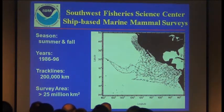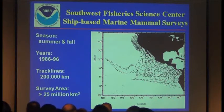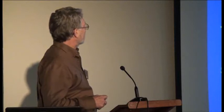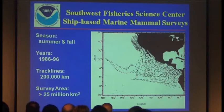Here you can see just some of the transect lines from a 10-year period of study from our Southwest Fisheries Science Center surveys. These were done in summer and fall of the years 1986 through 1996. The two main study areas are the Eastern Tropical Pacific and the U.S. West Coast — shown here are 20,000 kilometers of track line in a study area that's over 25 million kilometers squared.